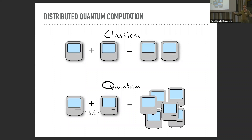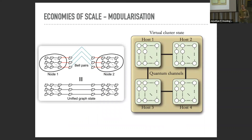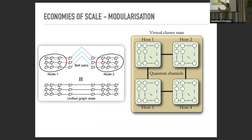The easiest way to think about this is in the cluster state model, where graph states serve as a resource for universal quantum computing. If a single node has access to a lattice cluster state of a given dimension, that dimension determines the size and depth of computation possible. If we have quantum communication links between multiple nodes, we can patchwork them together to make a distributed cluster state much larger than any individual node could achieve on its own.